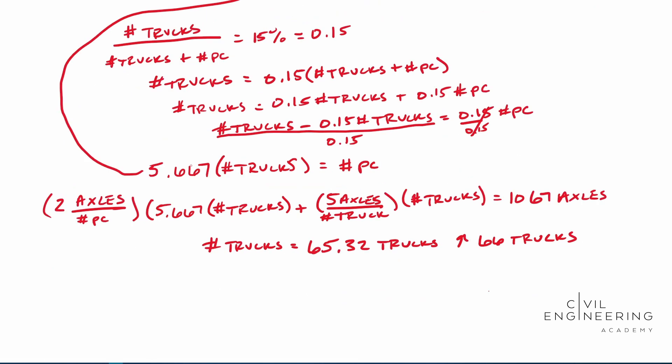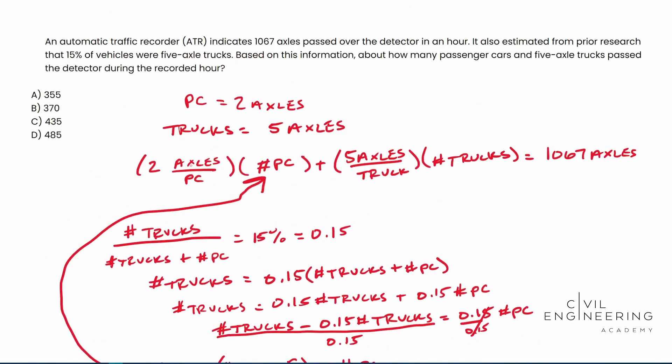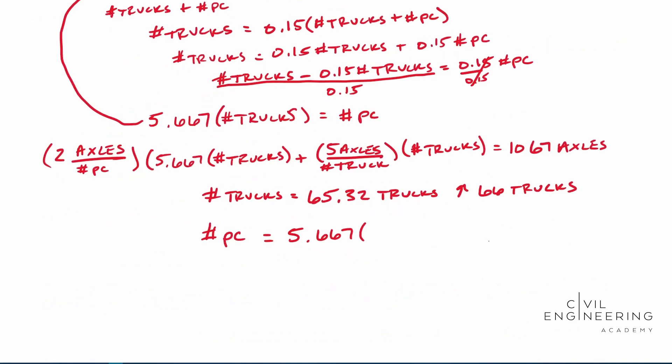All right. So now we can solve for the number of passenger cars. And this is going to be, we actually solved for it, it's 5.667 times the number of trucks. So we can use the 65 or we can use the 66. It doesn't really matter because it asked for about how many, right? So it says about how many passenger cars and five axle vehicles.